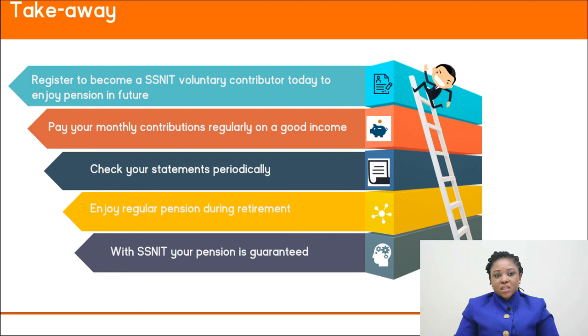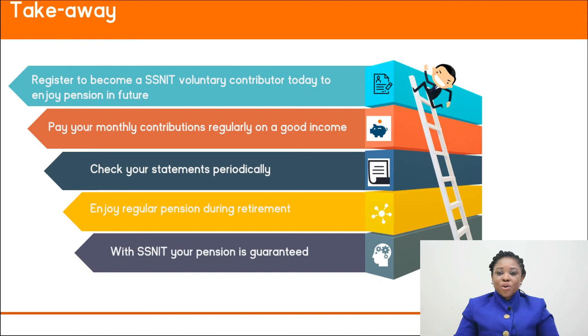Takeaways: we have learned who qualifies to be a voluntary contributor and how to pay contributions to secure a good pension upon retirement. Register to become a SNIT voluntary contributor today to enjoy a pension in future. Pay your monthly contributions regularly based on a good declared income. Check your statements periodically and enjoy regular pension during retirement. With SNIT, your pension is guaranteed. We will now pause for questions — do you want to enjoy a good life?